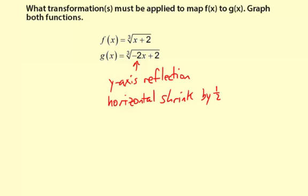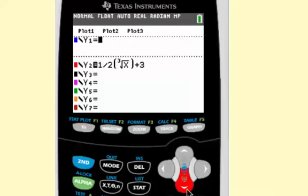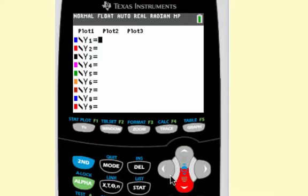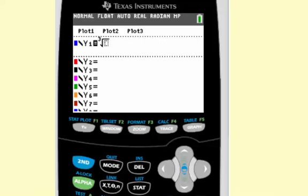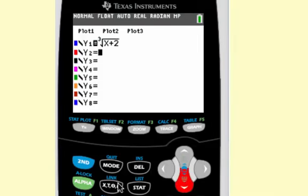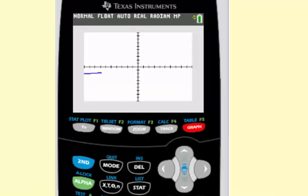So let's graph both of those and compare. So the cube root of x plus 2, and then we have the cube root of negative 2x plus 2. Okay, there is f of x. And here comes g of x.